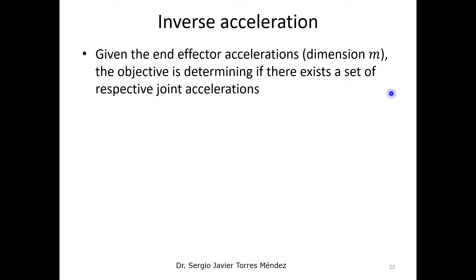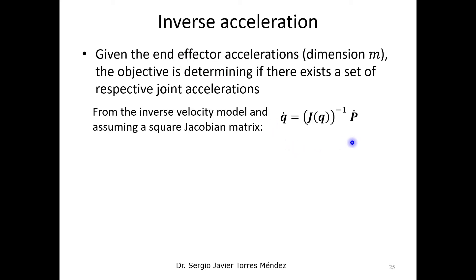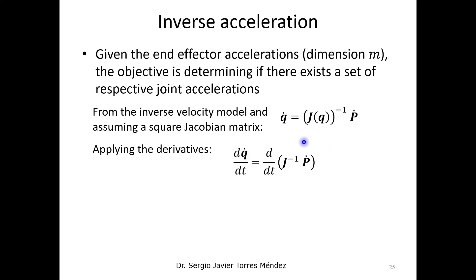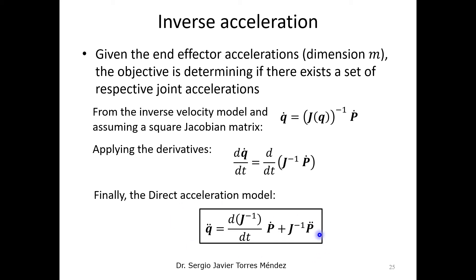For the inverse acceleration, the idea is to obtain a set of solutions for the joint accelerations given the end-effector accelerations. We start with the inverse velocity model that includes the inverse Jacobian matrix, then apply the time derivative to both sides. The result is: the time derivative of the inverse Jacobian matrix times the end-effector velocity, plus the inverse Jacobian matrix times the end-effector accelerations, in order to obtain the joint accelerations.